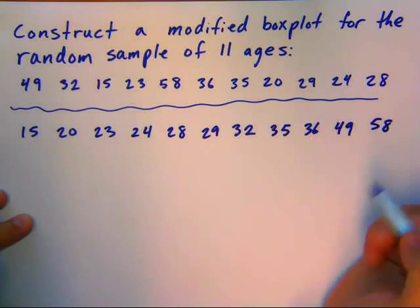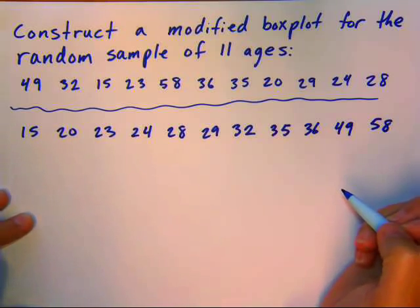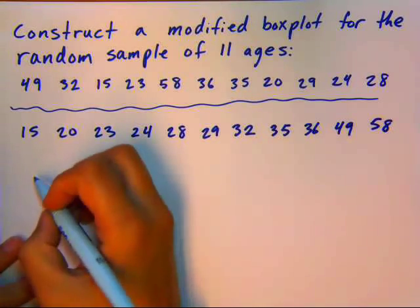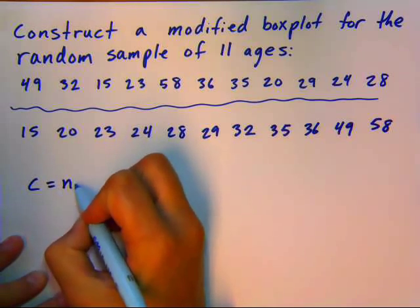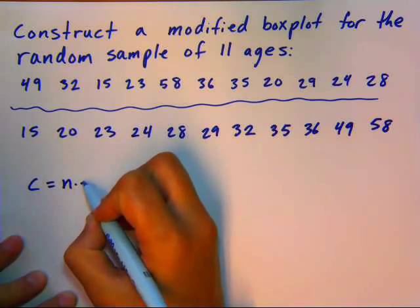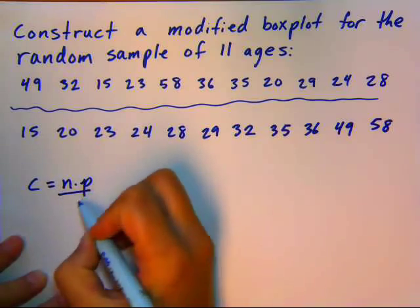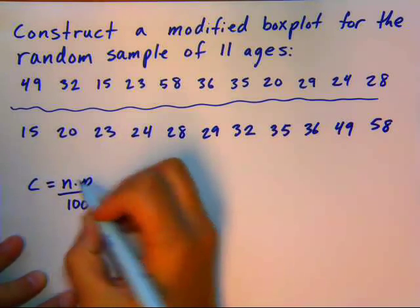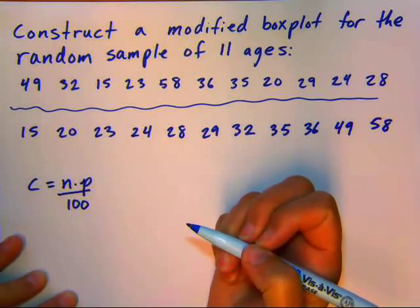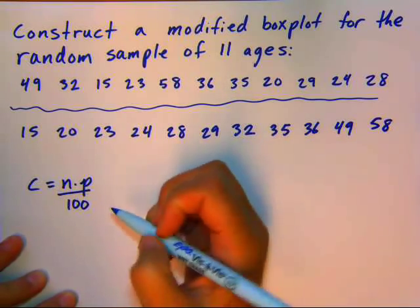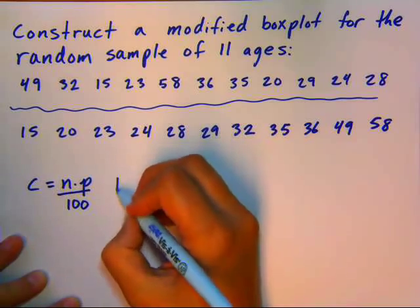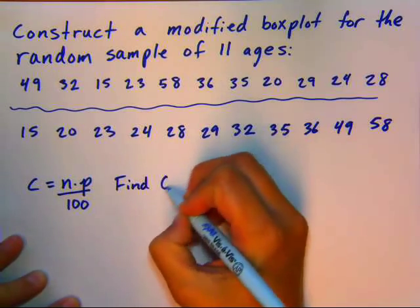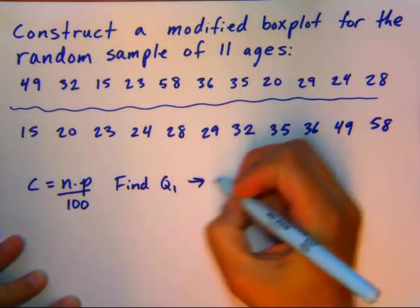Next thing we're going to do is actually find where the quartiles are. So we're going to first look at where we go in the data set to find our 25th percentile, which is the same thing as the first quartile. And we're going to use this constant here, where n is your sample size and p is the percentile that you're trying to find. So when we're trying to find Q1, we're going to use for our count over,